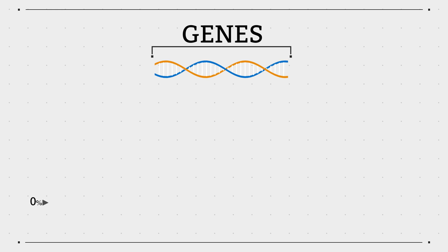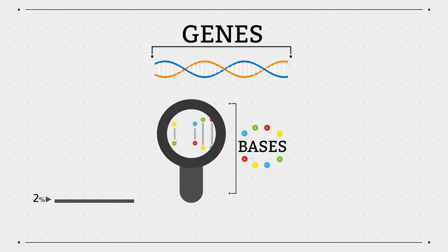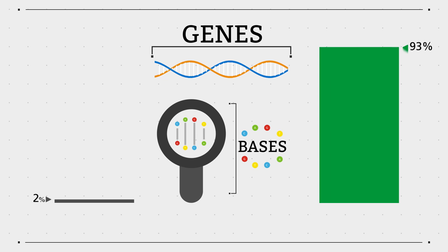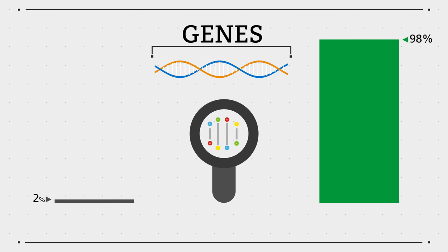But genes only account for around 2% of all our genetic information, which is made up of more than 3 billion letters of DNA called bases. While we don't yet understand the exact function of all the other 98%, we do know that changes to this DNA can also impact our health.